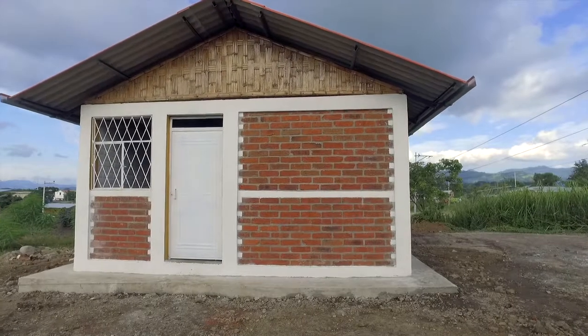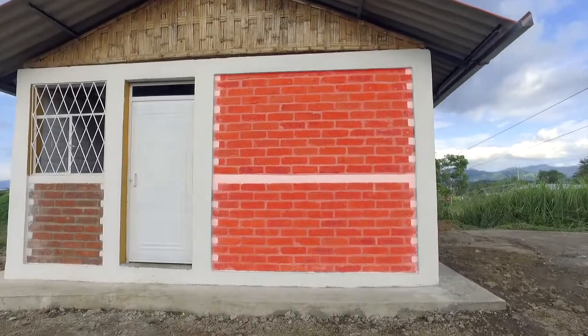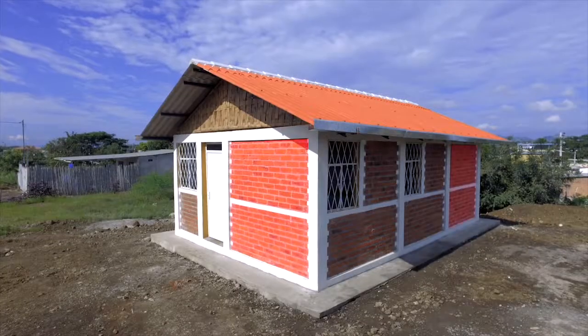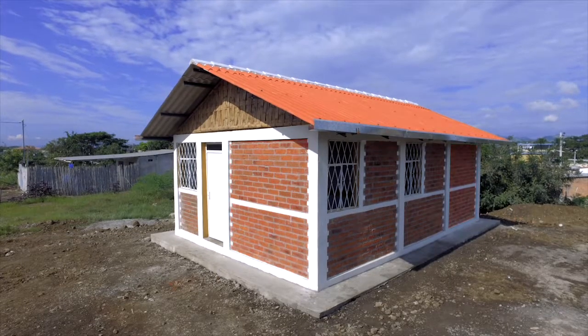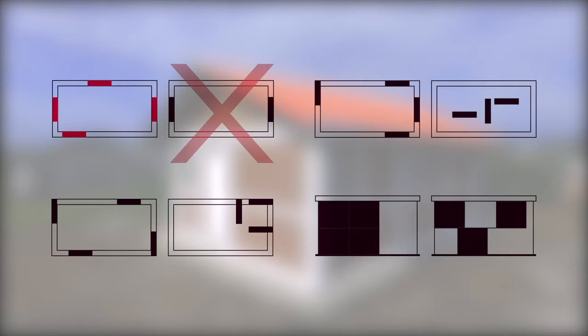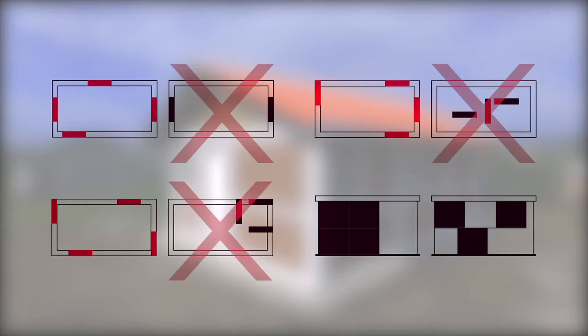Shear Walls. A shear wall is a solid wall panel whose function is to brace the building. Shear walls should have no openings. If they do, the openings should be of a small size and located away from the wall panel diagonals. In a building, shear walls should be placed in both directions of the construction, as much as possible on the outer walls, evenly distributed on the building layout, on each floor, and placed respecting vertical continuity.